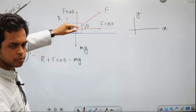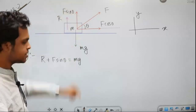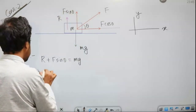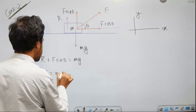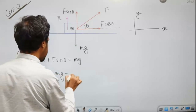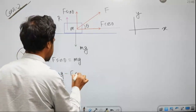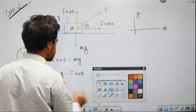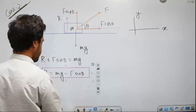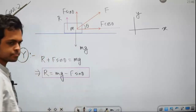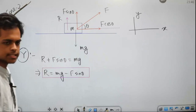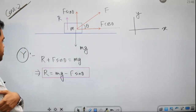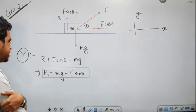mg minus F sin θ, mg minus F sin θ, equal to data — AG equal to data. mg minus F sin θ — ather, x of equation.